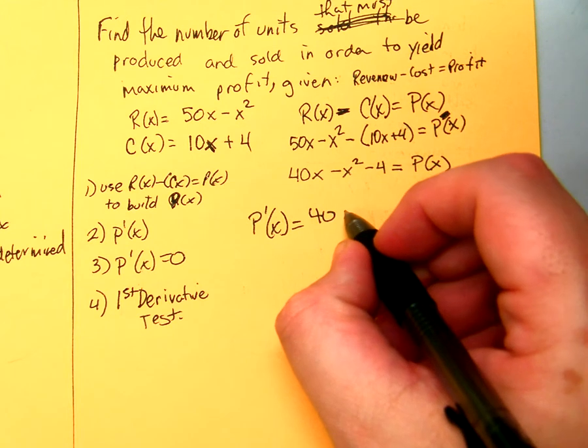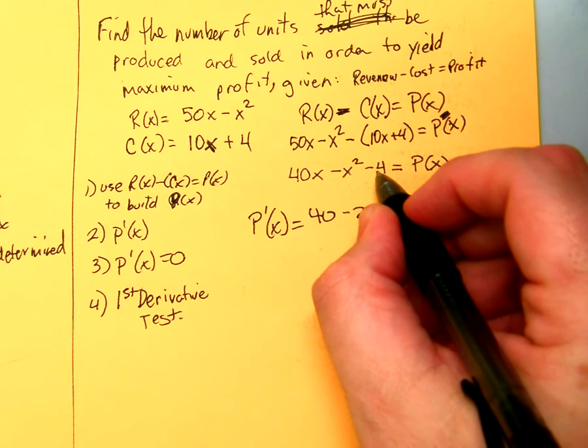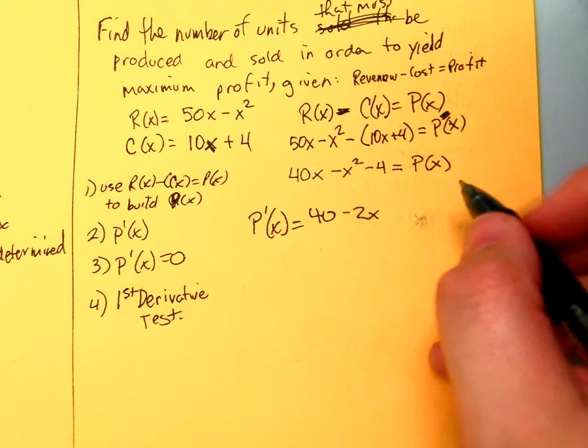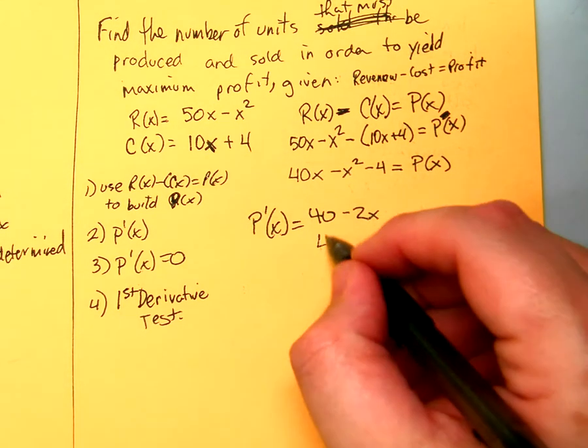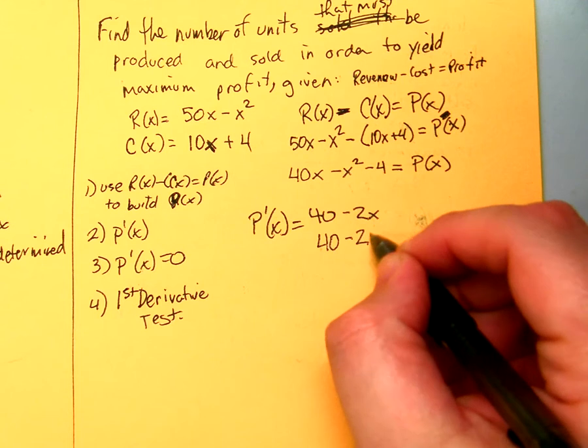Okay, minus 2X. What's the derivative of negative 4? Zero. Alright, so now what do we do?